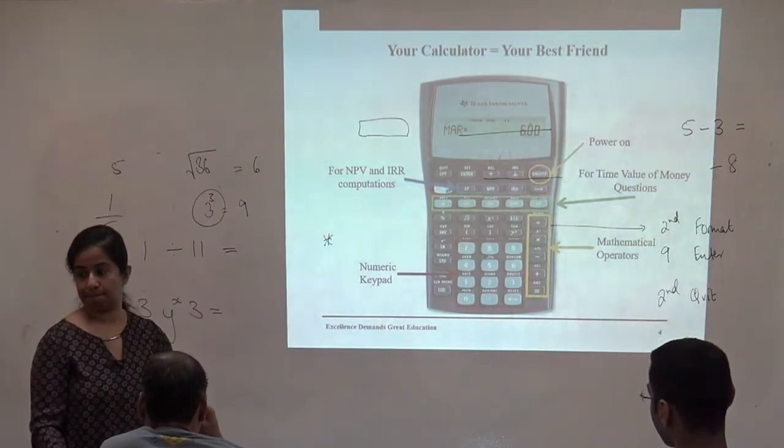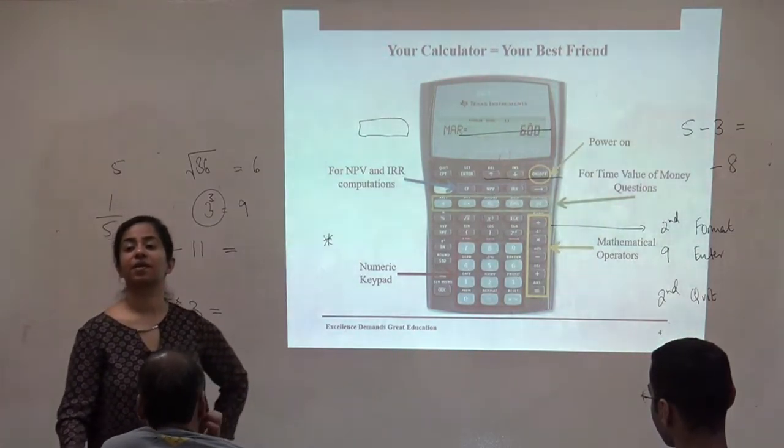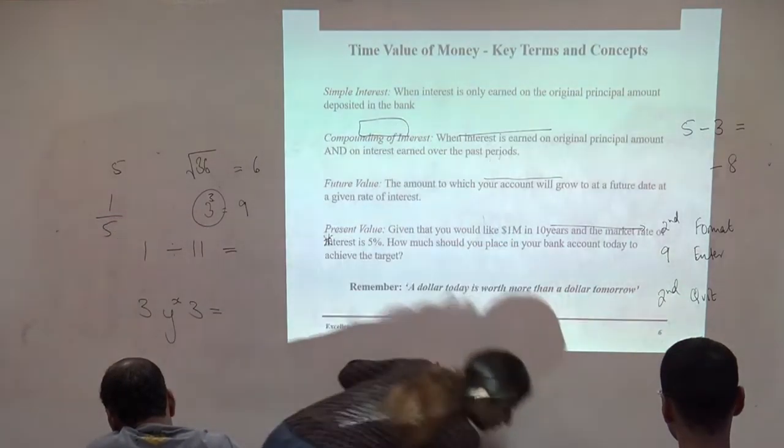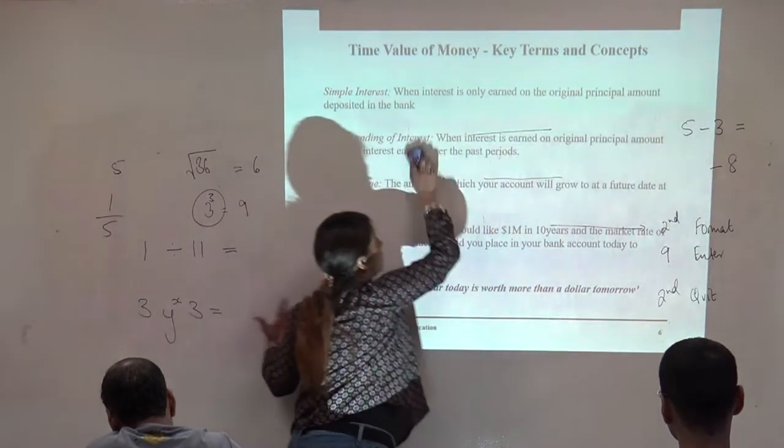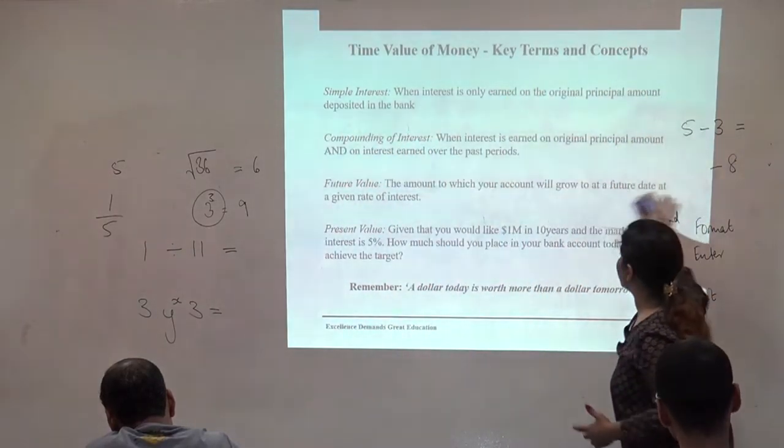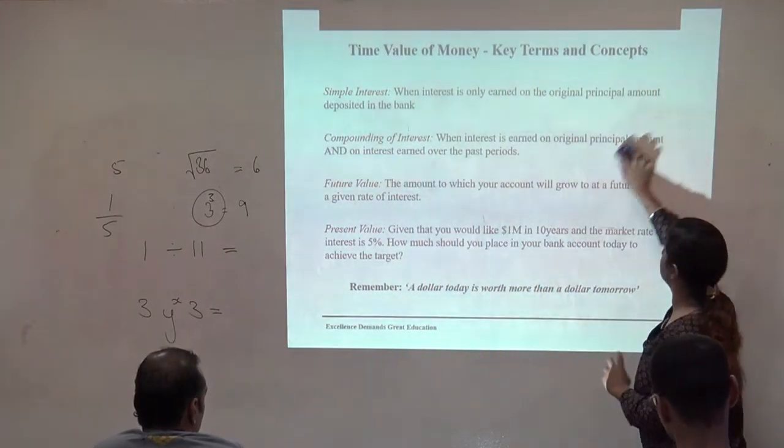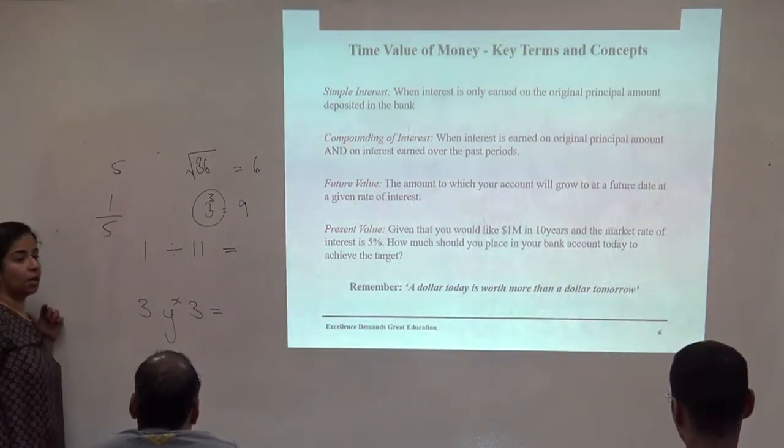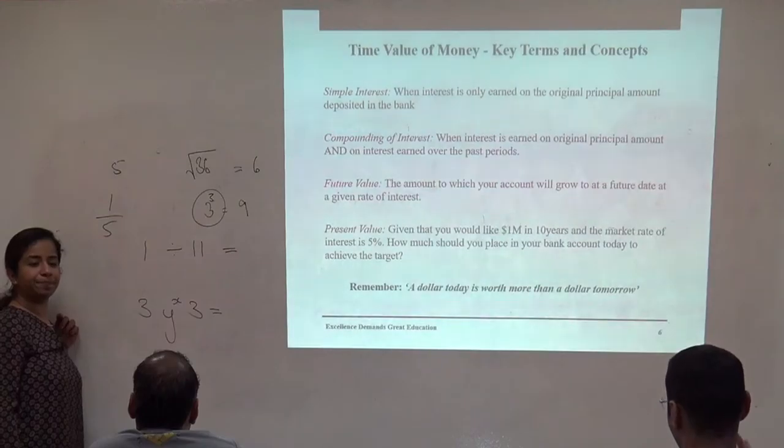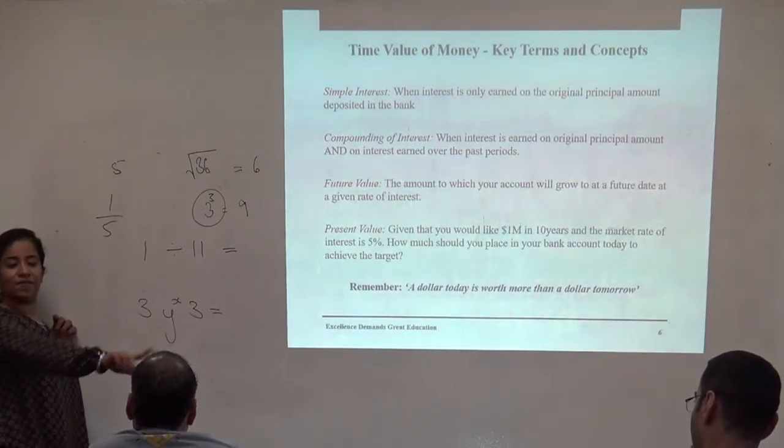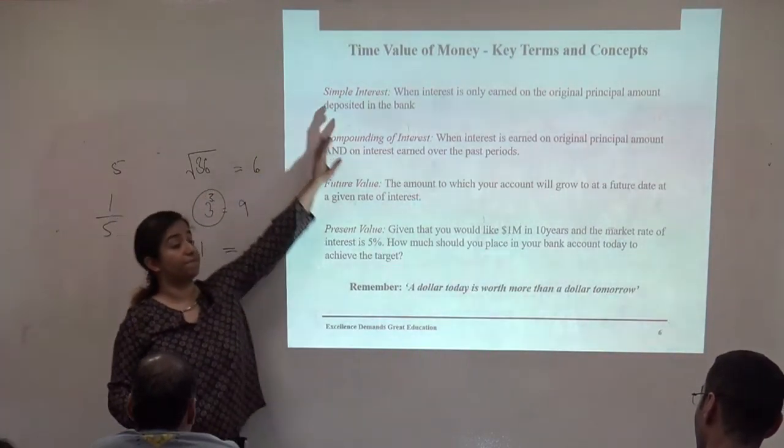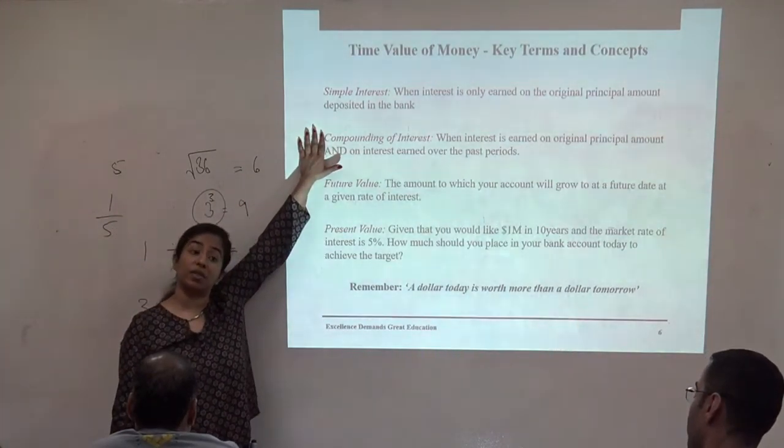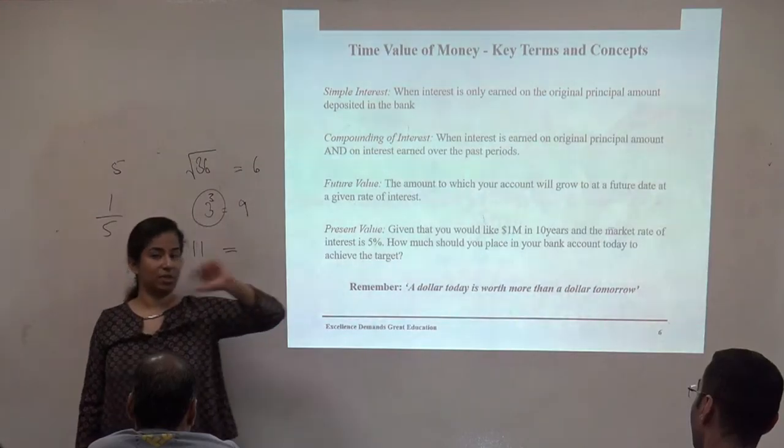CPT, which is on the top left of your calculator right here. CPT, we'll be using that a lot. It's called compute. So whenever you want a calculator to do some math for you, it's compute. And then we're going to use something called the BGN mode, which is slightly here. So if you look at the PMT button, and a little above it, in yellow, it says BGN. So we'll be getting to that in a bit. This is the regular, the fixed stream of payments, not unequal cash flow.